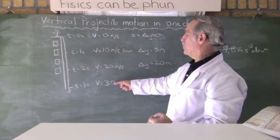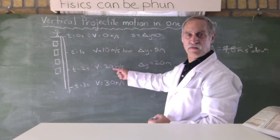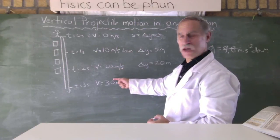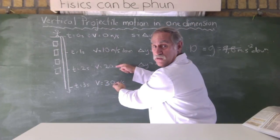Let's work it out for here. Between here and here, what's the average velocity? 20 and 30, the average is 25. So, in this period of time, it's going to travel 25 meters.